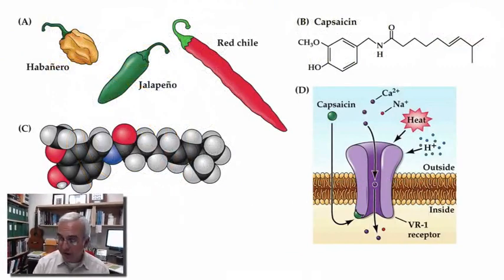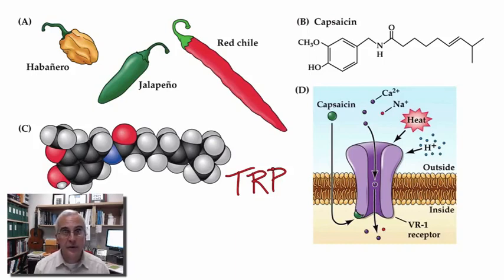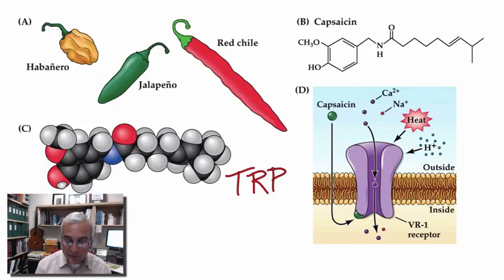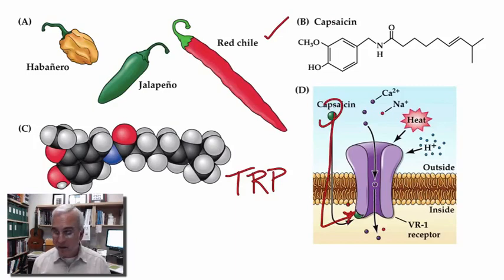We call these receptors TRP channels — transient receptor potential channels — and they come in a large variety of specific molecular species tuned for particular types of substances that might activate them. Some are sensitive to heat or cold; some to acids and protons; others to particular chemicals in the environment or substances we ingest. One illustrated here is capsaicin, the substance found in many hot and spicy foods. Capsaicin can interact with a binding site on the cytoplasmic side of some of these TRP channels and can modulate the currents gated through these channels.